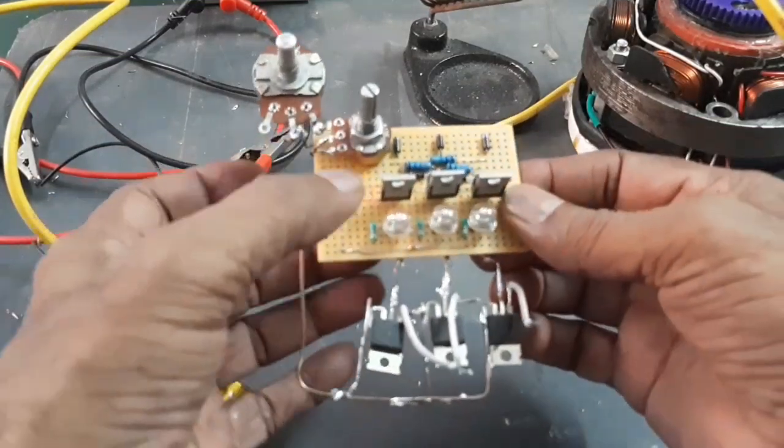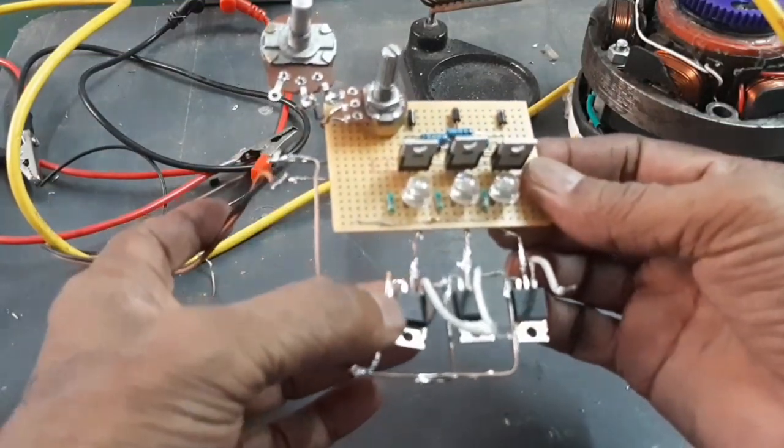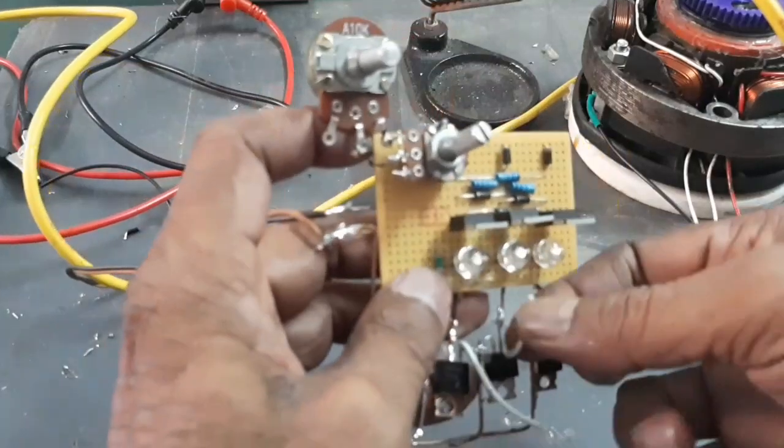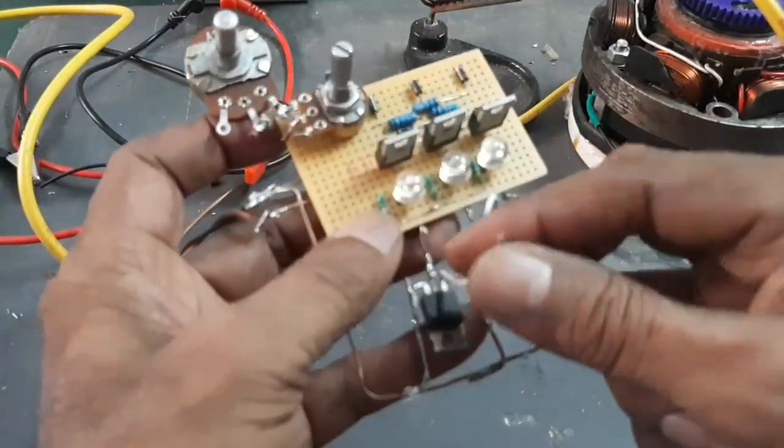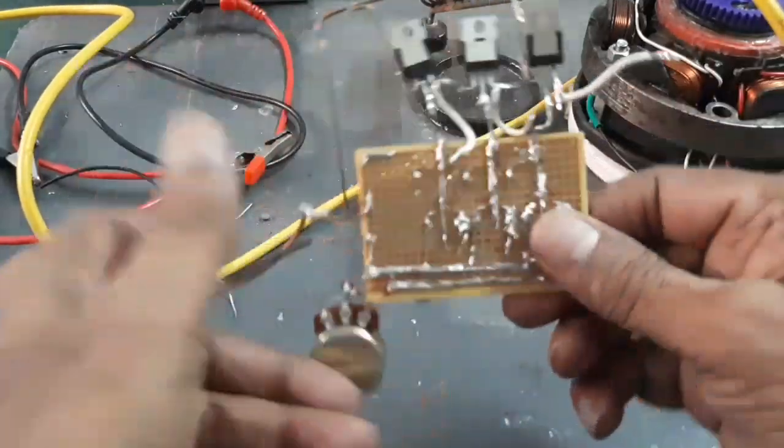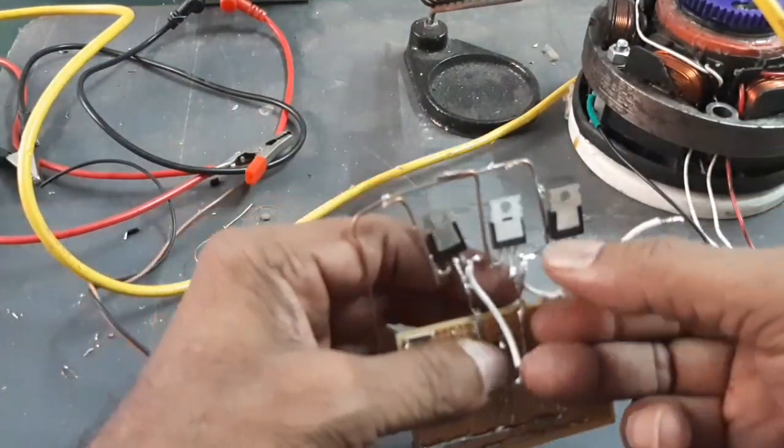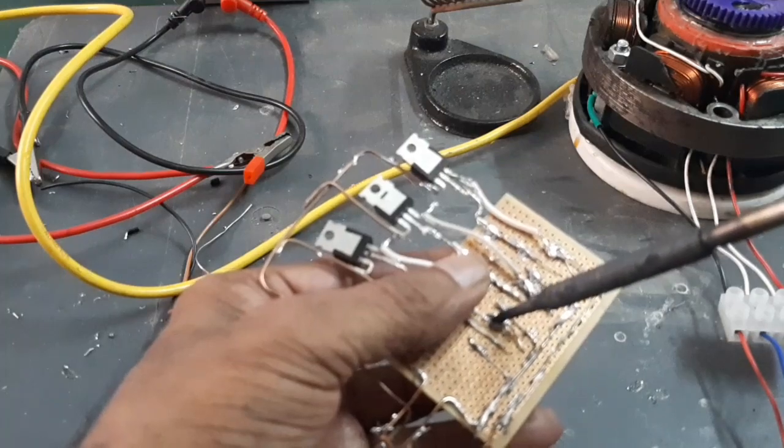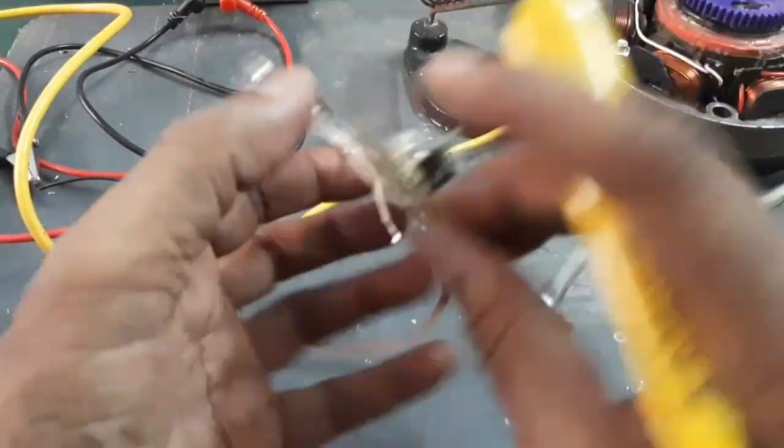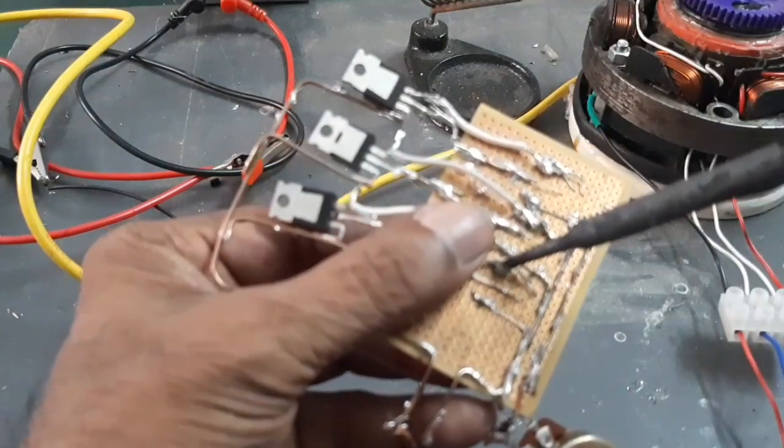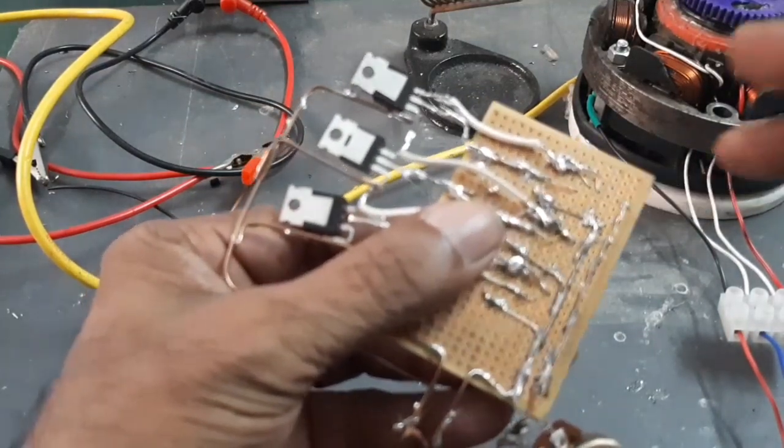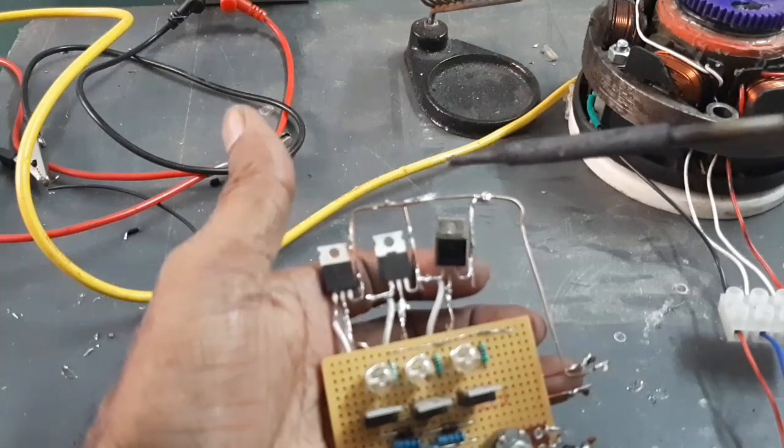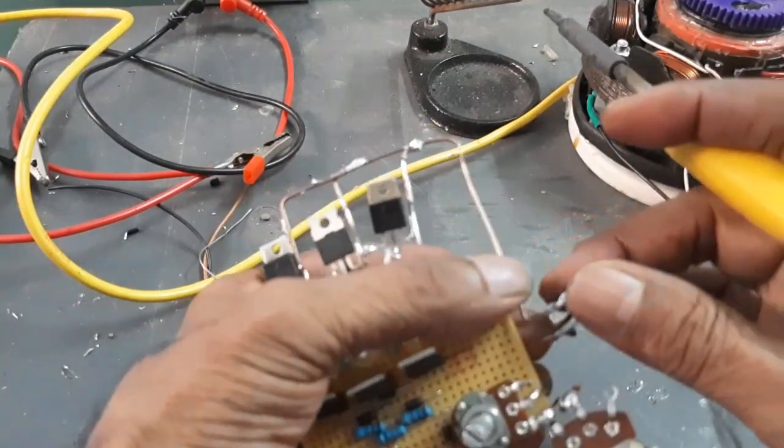Now I connect the N-channel drain and P-channel drain. Now I'm going to connect the gate supply parallel to the P-channel. Here, the three source leads are shorted and connected to the positive supply.